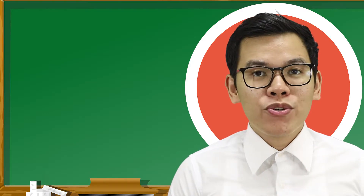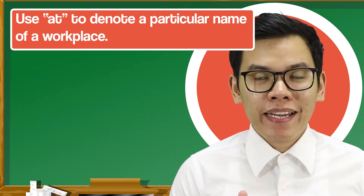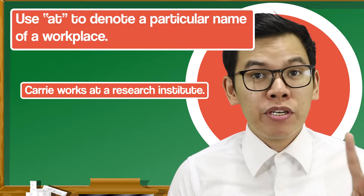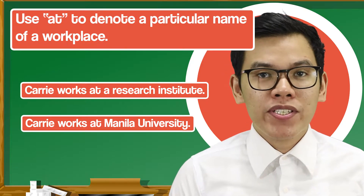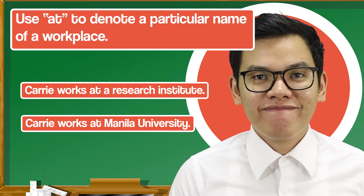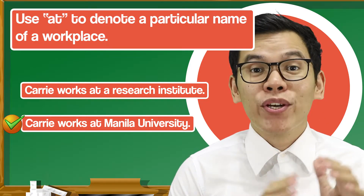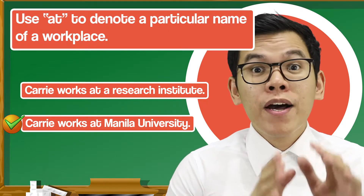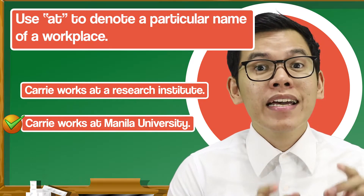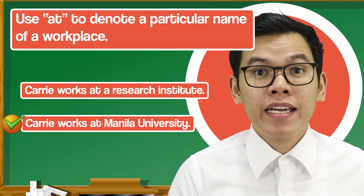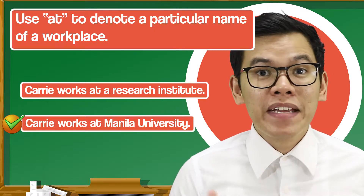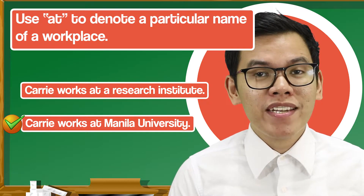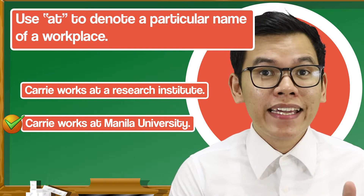The next rule is we use 'at' to refer to a particular — specific — name of a workplace. 'Carrie works at a research institute' versus 'Carrie works at Manila University.' The second sentence is correct. Since 'research institute' is just a generic name, we should not use 'at.' If it's generic, use 'in'; if it's specific, use 'at.'